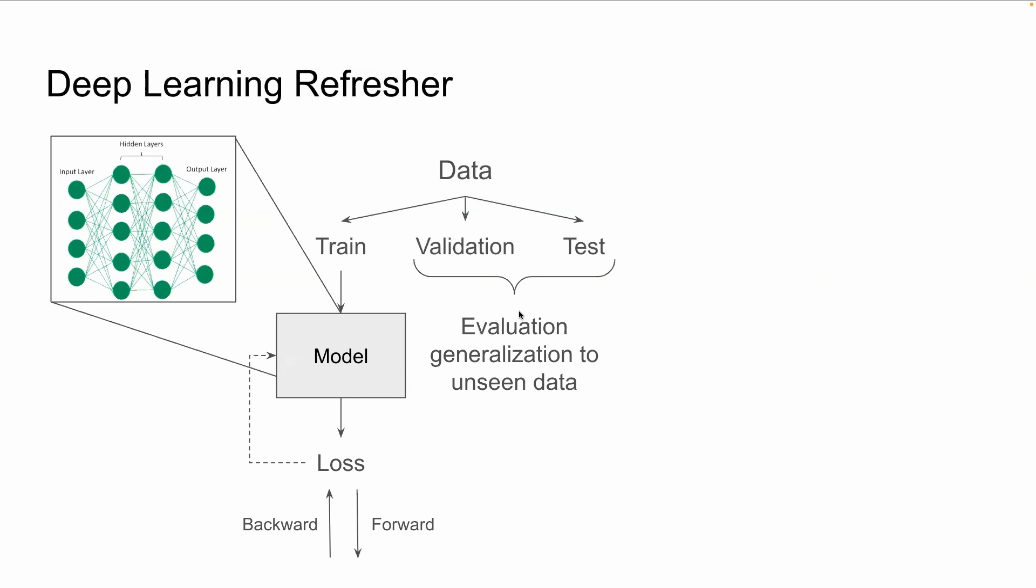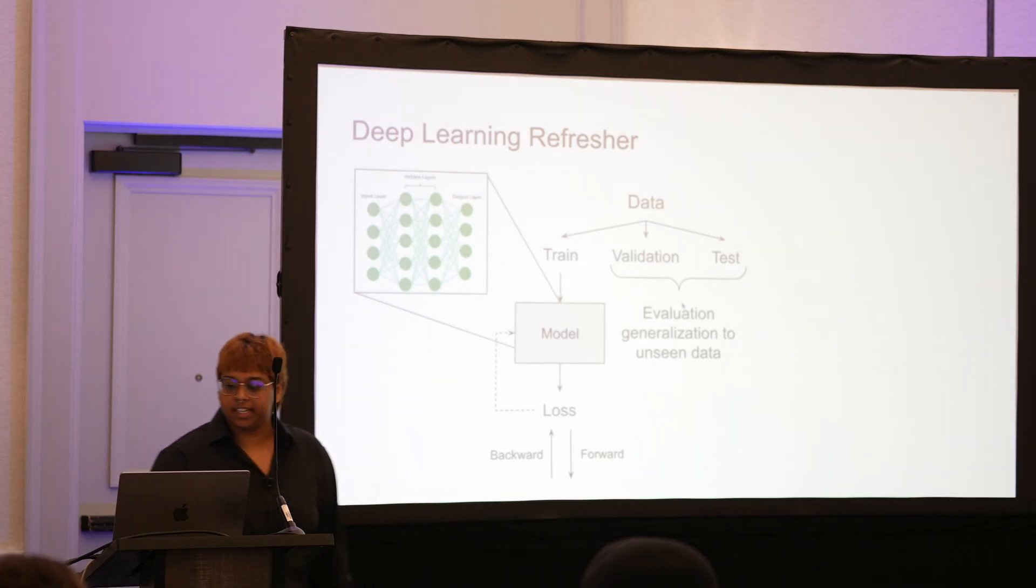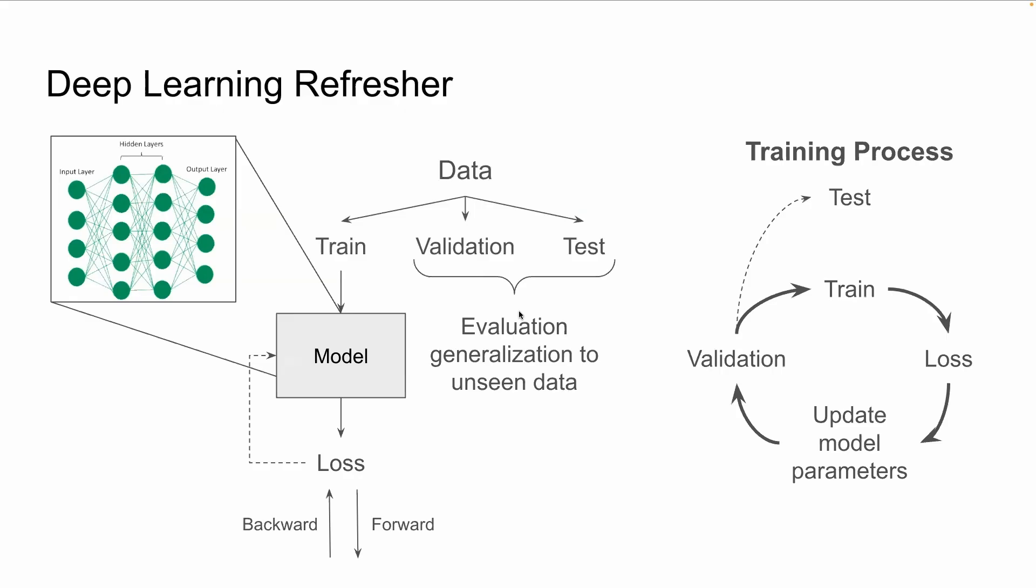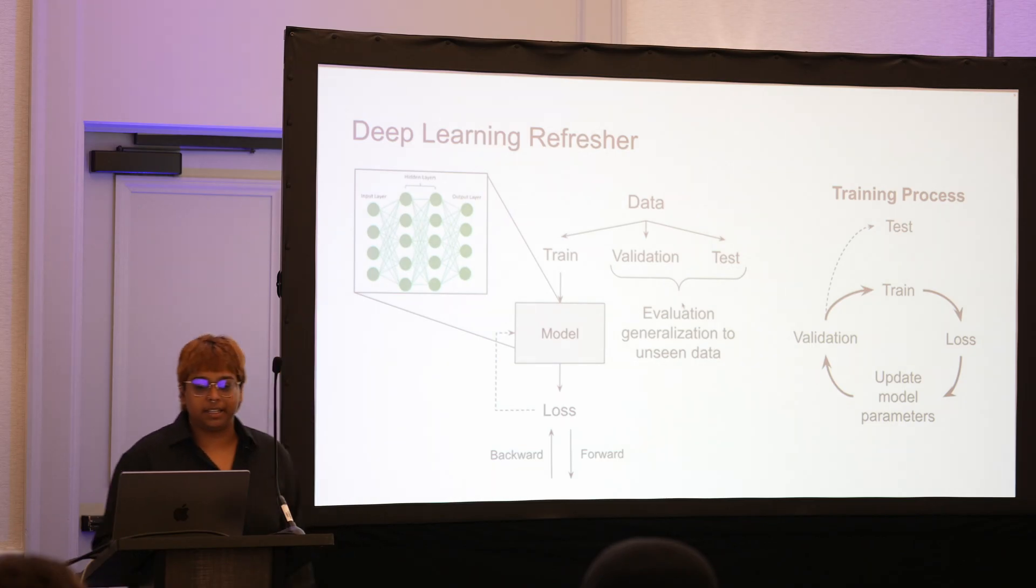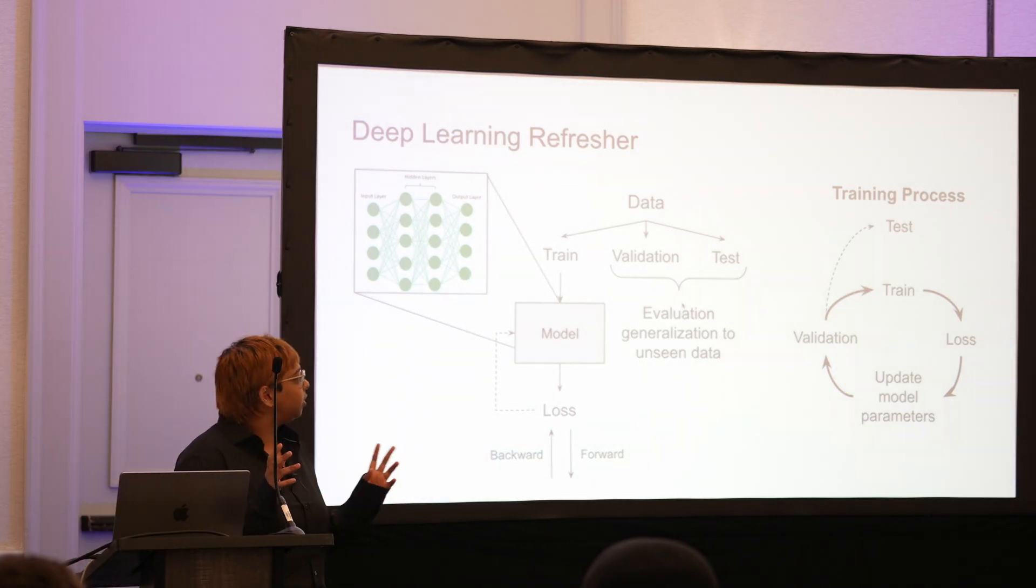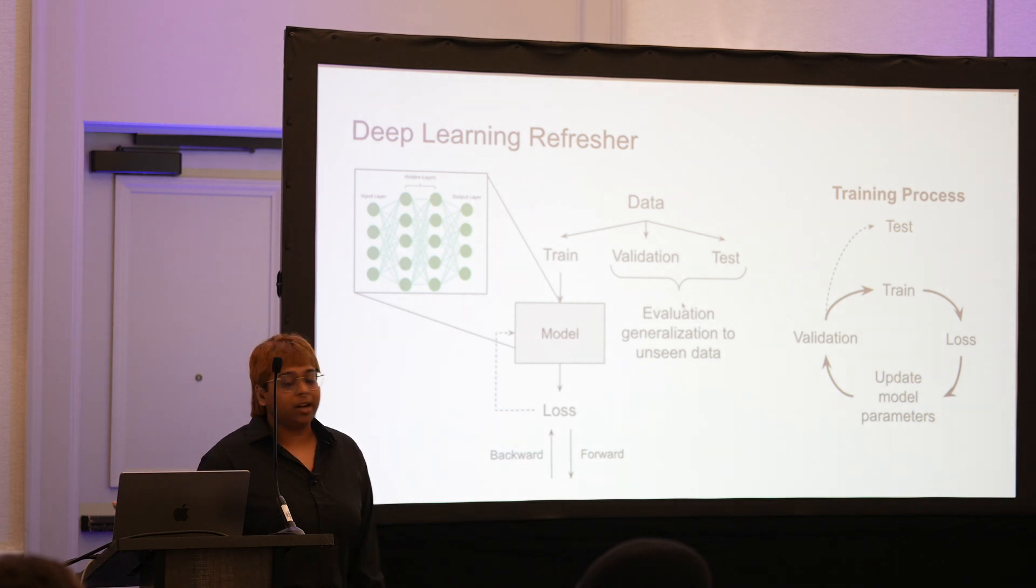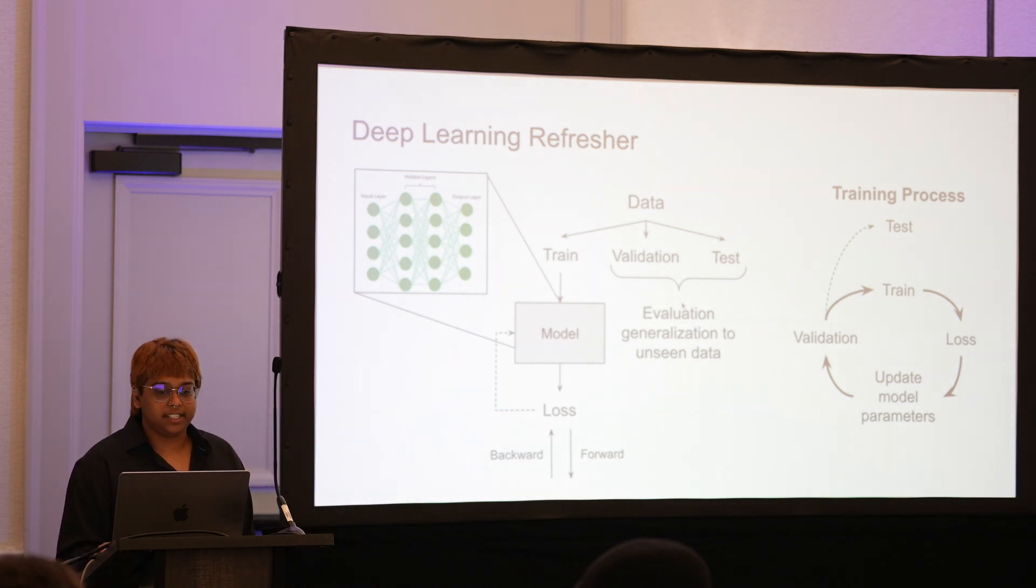Once you've trained the model, you want to test it. There are two ways to test the model. One is during the iterative process of training—that's what the validation set is used for. Once you're all done training and the model performs well on both the training and validation sets, you test it on the test set. This is the final test for your model. It's data the model has never seen before, so it tests how well it can generalize to unseen data.